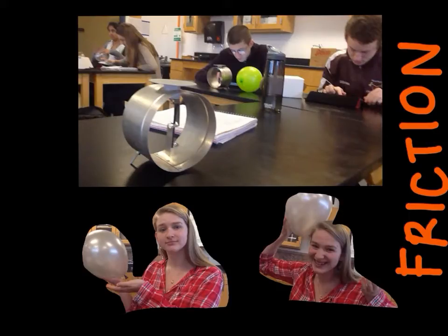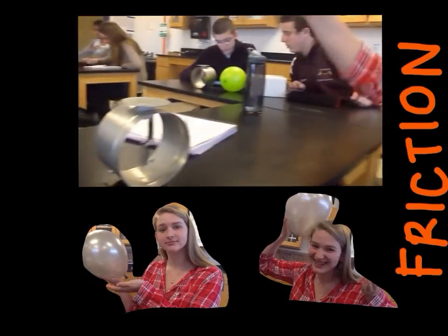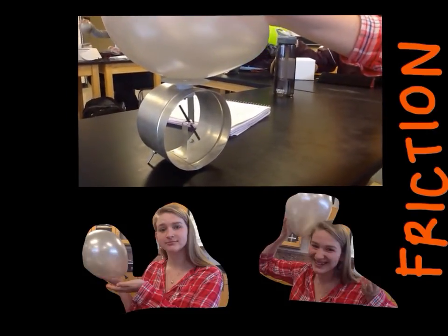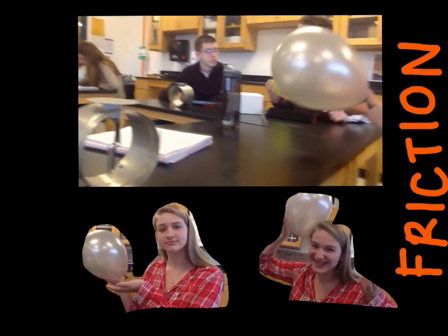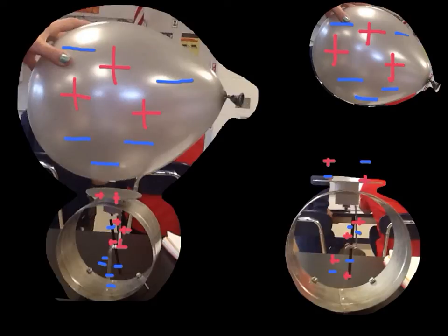Our first concept is charging by friction. Lauren negatively charged the balloon by rubbing it onto her head, and then this makes the negative charges in the balloon repel with the negative charges in the electroscope, moving the straw.